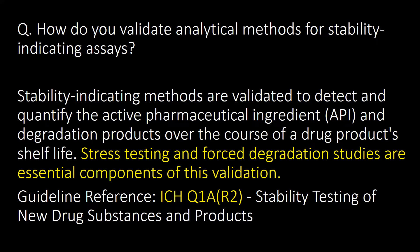How do you validate analytical methods for stability-indicating assays? Stability-indicating methods are validated to detect and quantify the active pharmaceutical ingredient (API) and degradation products over the course of the drug product's shelf life. Stress testing and forced degradation studies are essential components of this validation. Guideline reference: ICH Q1.